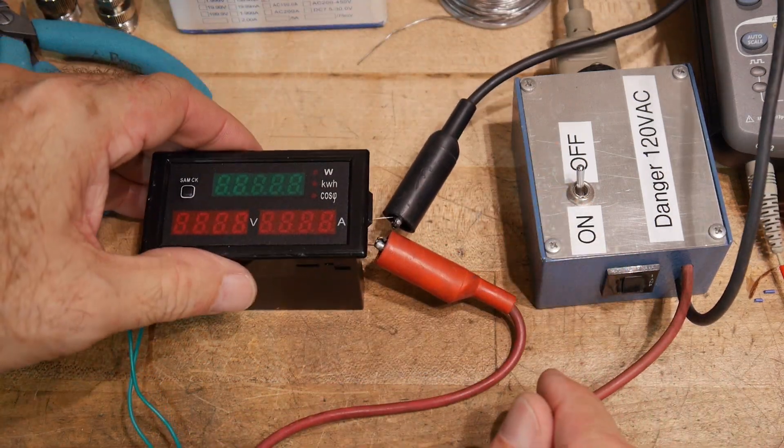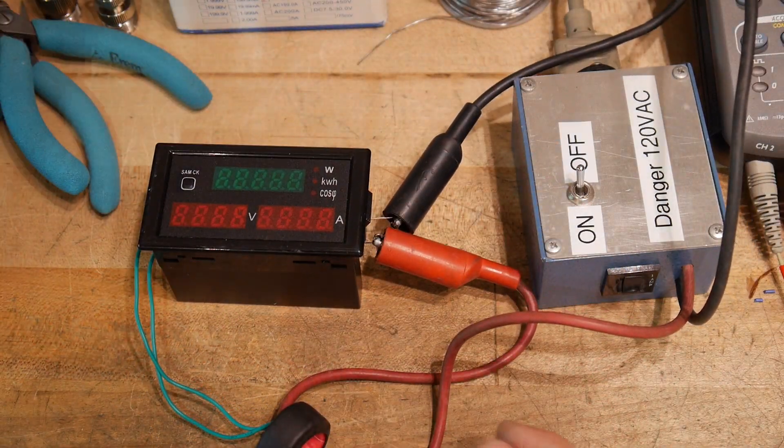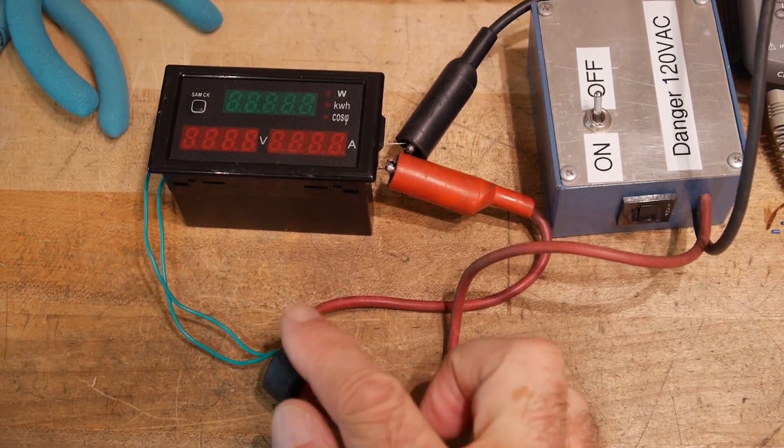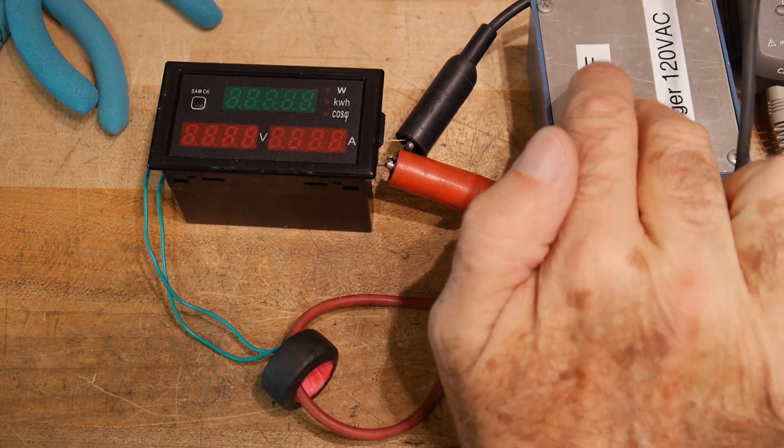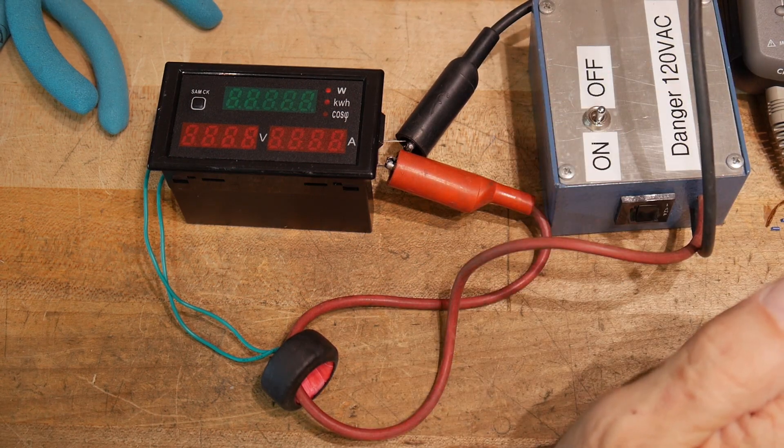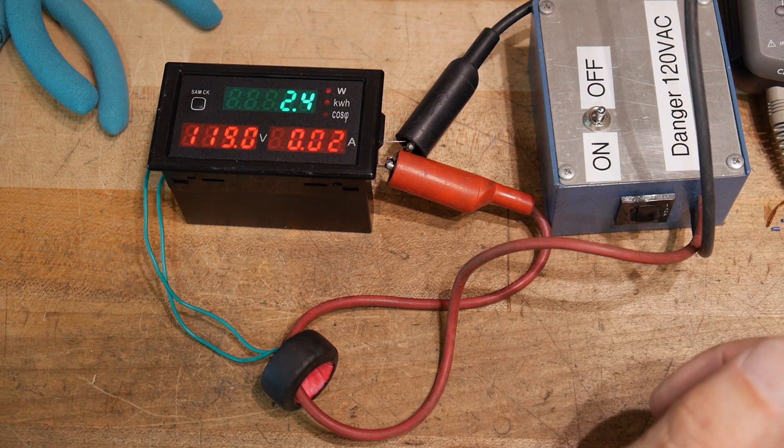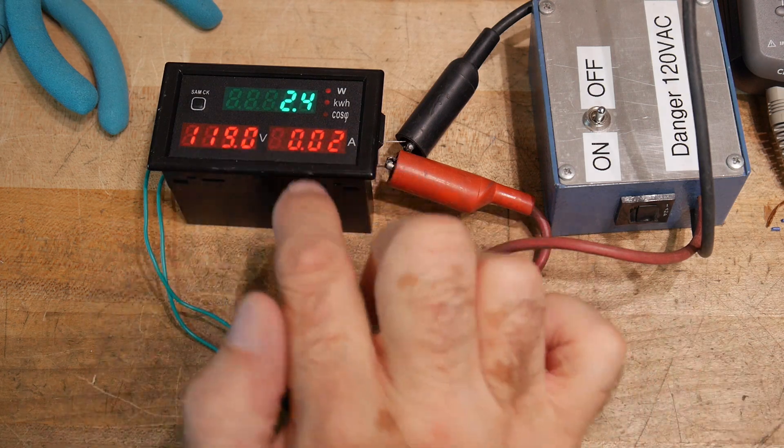We will go over here to the meter. And then the other lead we will put over here. There we go. So we have all of this going. We have our toroid looking at the current through the red wire. Now let's turn it on. Nothing. Oh, there it goes. Takes a while to warm up. Oh, there we go. It's actually measuring something.